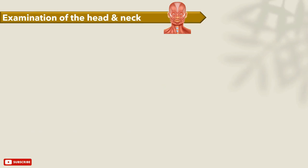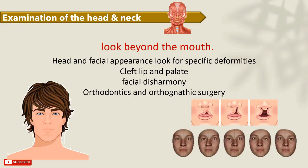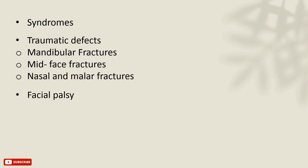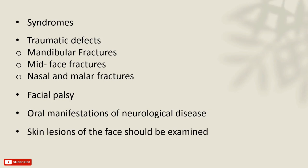After finishing the medical examination, we move to the examination of the head and neck — always look beyond the mouth. Inspect the head and facial appearance for any deformities like cleft lips or palates, facial asymmetry or disharmony, and the need for orthodontic or orthognathic surgeries. Recognize any syndromes, traumatic defects, facial palsy, or oral manifestations of neurological diseases. Any obvious skin lesions on the face should be examined for color, scaling, bleeding, and crusting, and palpated to assess if they are fixed or movable and their consistency. Also be alert for any hairless patches on hairy parts of the face, as this might indicate an area previously exposed to radiotherapy.